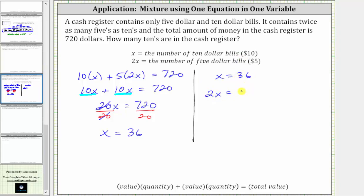Substituting 36 for x, we have two times 36, which equals 72. There are also 72 $5 bills in the cash register. But again, the question is how many tens are in the cash register. So now we know there are 36 $10 bills in the cash register.